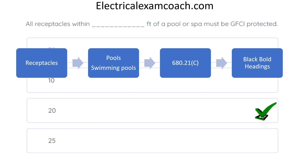I want to note that this does not negate all of the requirements in 210.8(A) and (B), which are your overall requirements for GFCI protection. This is in addition to those. Not only does 210.8(A) or (B) catch you for GFCI protection, but you're also required to do it within 20 feet of the pool or spa.